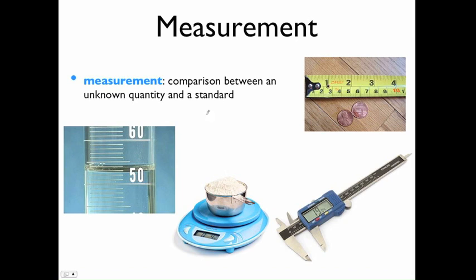Measurements are when we take an unknown quantity - here you've got an amount of powder or liquid or you've got these pennies - and we compare it to a standard. The standard is the scale, the graduated cylinder, calipers, or ruler. The unknown quantity is the thing that you're measuring, and the standard is the thing that you're using to measure things.